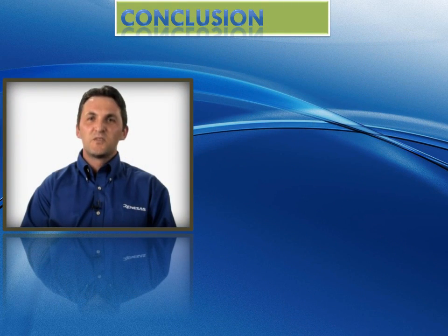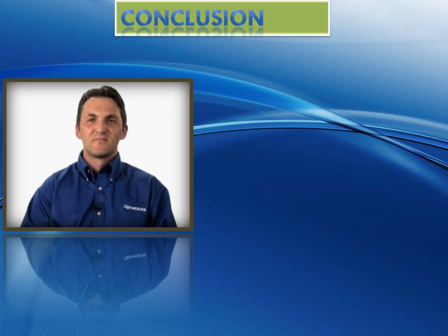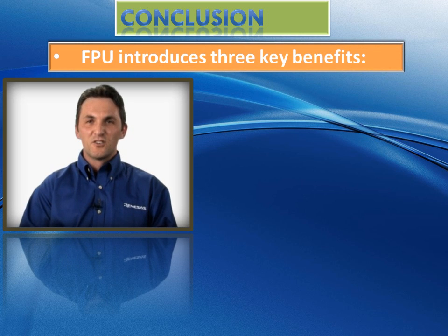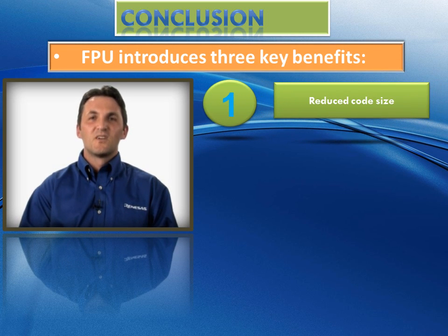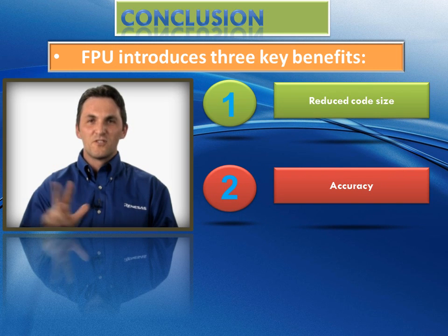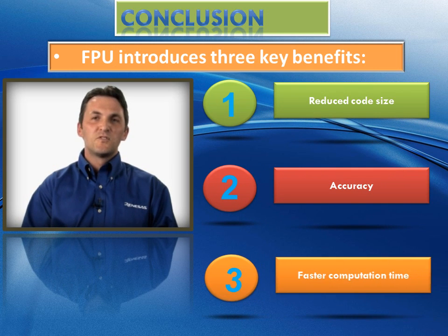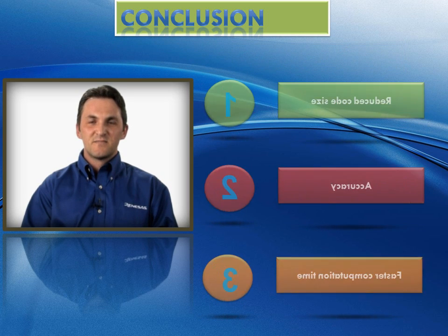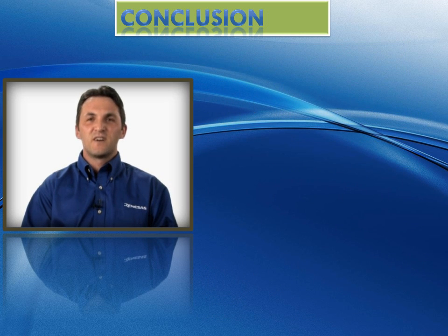Renesas is leading the way in creating MCU architectures to meet today's performance demands in the most cost-effective way. The RX, with its floating point unit, introduces three key benefits. First: code size. Second: accuracy. Third: general improved mathematical computation performance. RX — performance without sacrifice.